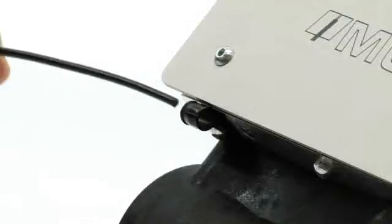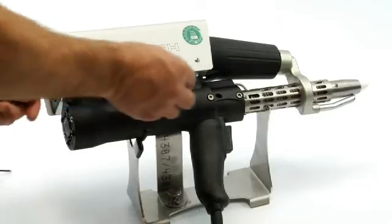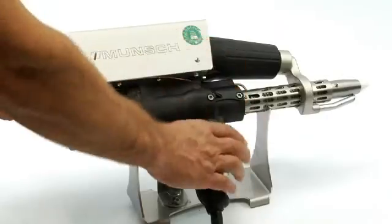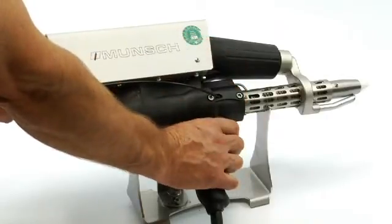Welding rod feeds into the extruder through a small hole just behind the barrel on the right side. Once inserted, squeeze the trigger to pull the rod in.